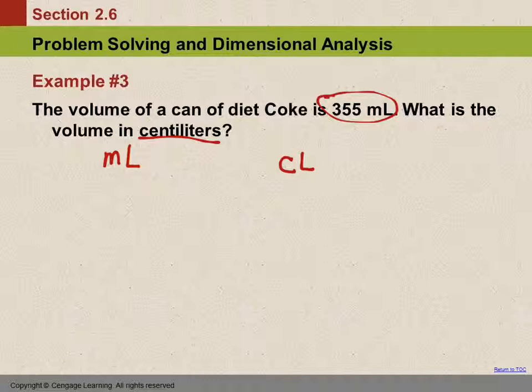We're figuring out where we're starting and where we're ending up, and then we have to figure out how to get there. Here we have two metric units of volume, milliliter and centiliter. If we look at them, they each have a prefix, centi and milli. When you have two prefixes, that means you need two steps.